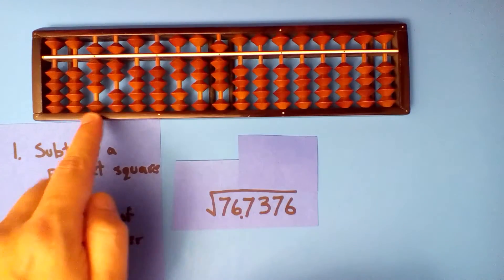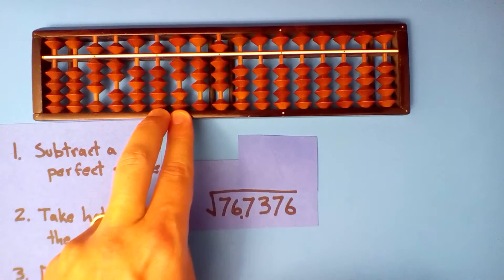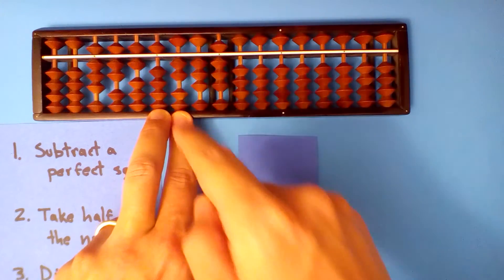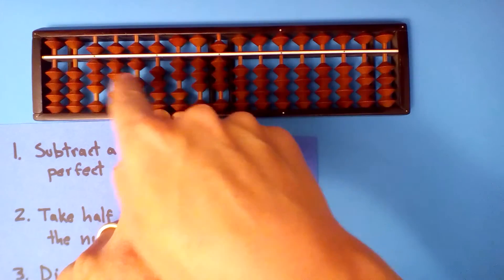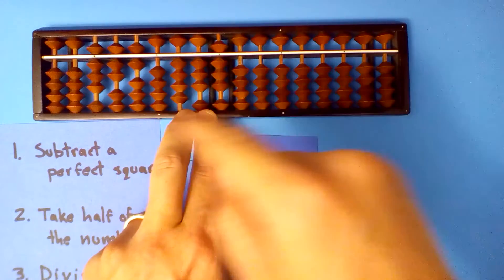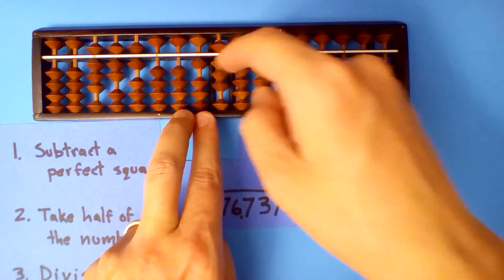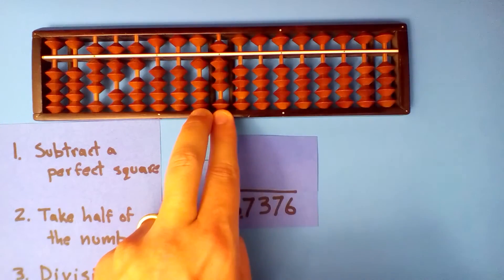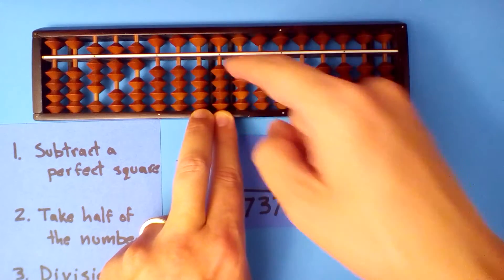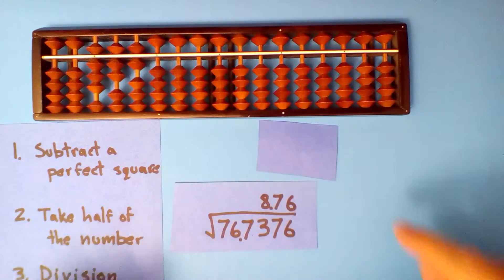How many times does 8.7 go into fifty-two? Six times. Multiply and subtract: six times eight is forty-eight. Six times seven is forty-two. Six times itself is thirty-six, and half of that is eighteen. Our root is 8.76.